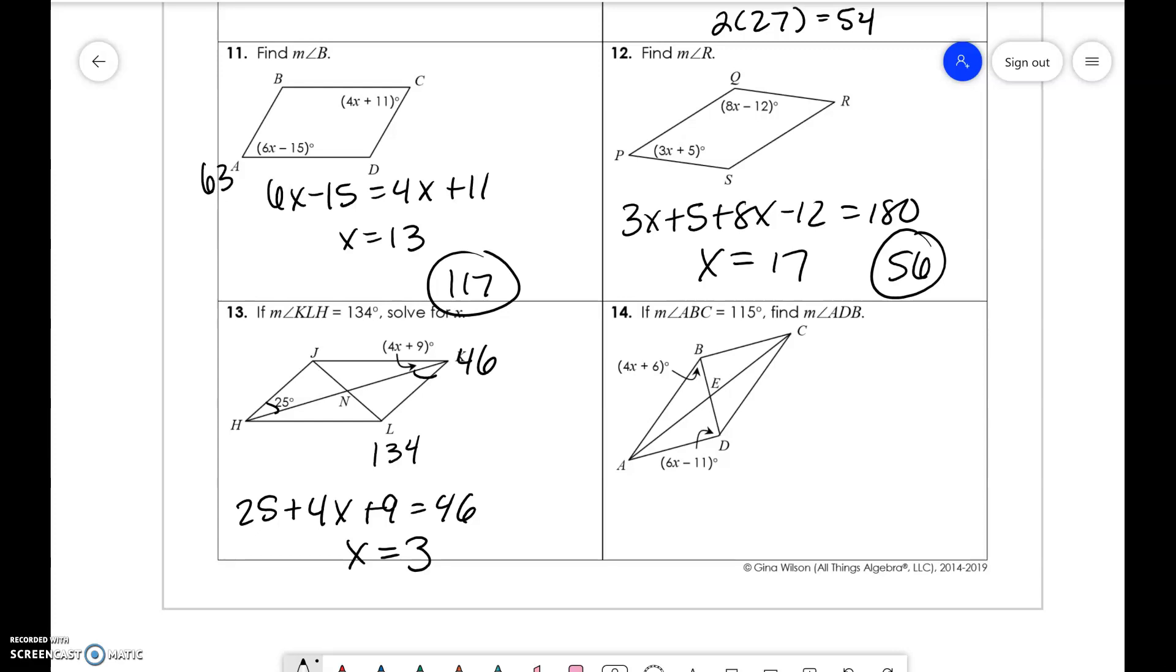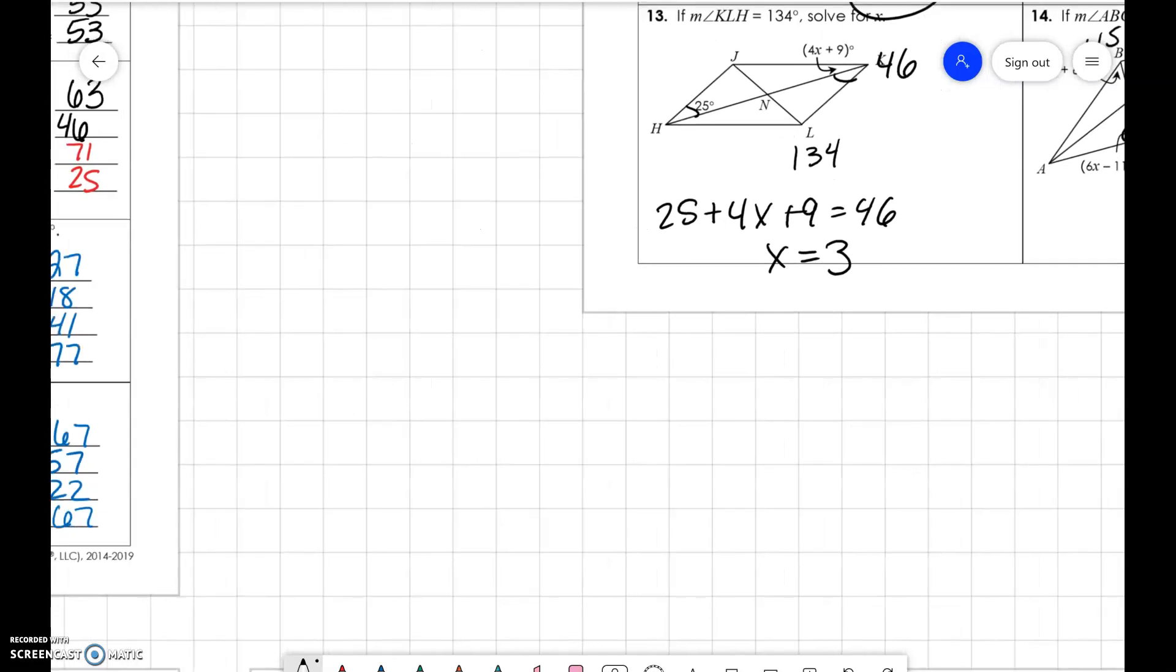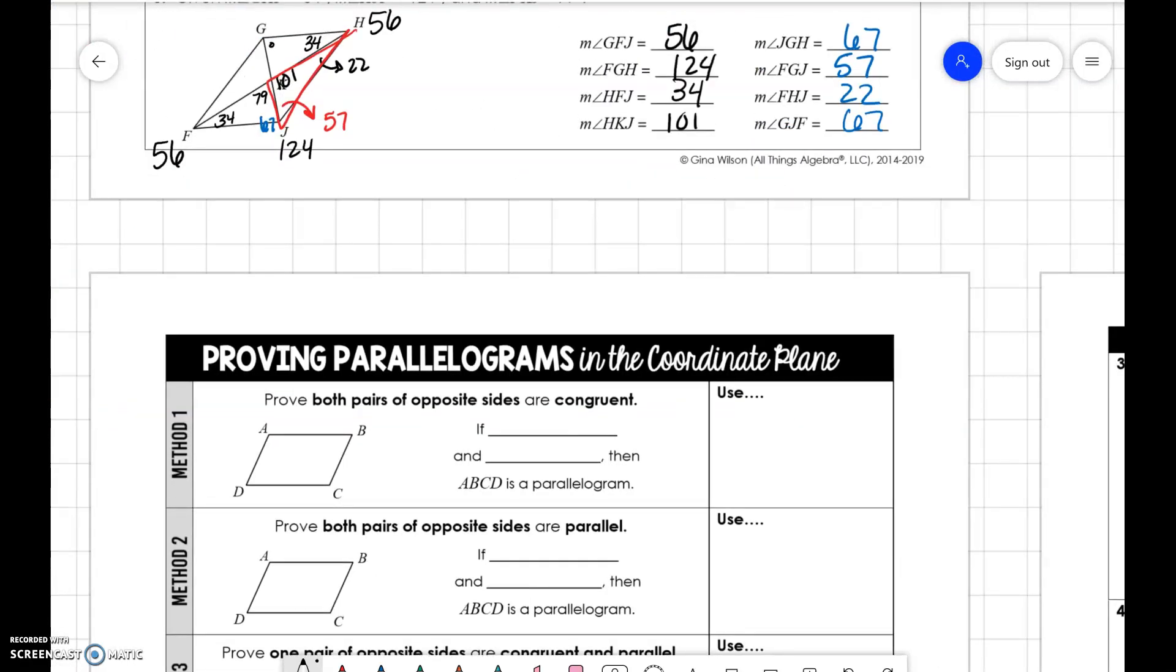And the last problem for here, these two angles, they add together and equal 115. So we get X is equal to 12. We're trying to figure out what A, D, B is. So you're plugging into 6X minus 11, which is 61. Okay. I'm not going to have enough time. It only allows me to do 15 minutes. So I'm going to upload this and then I'll have the next one up for you.